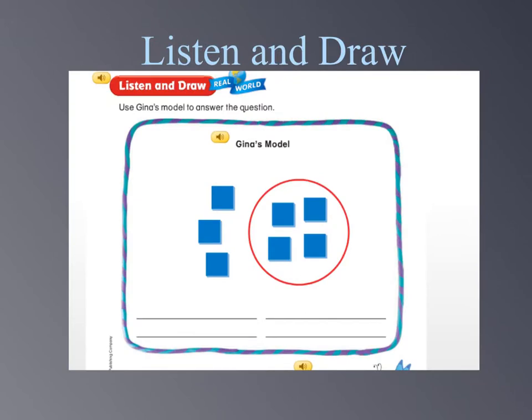Now it's time for listen and draw. You may want to have a sheet of paper and a pencil in front of you. So if you don't have one, go ahead and pause the video and do that now. Let's take a look at Gina's model. Gina put 4 color tiles inside the circle and 3 color tiles outside of the circle. What addition fact could be written for Gina's model? Go ahead and think about that and write it down on your own paper. If you wrote down 3 plus 4 equals 7 or 4 plus 3 equals 7, you'd be correct. These addition facts show the two parts 3 and 4 added together to make the whole, which is 7.